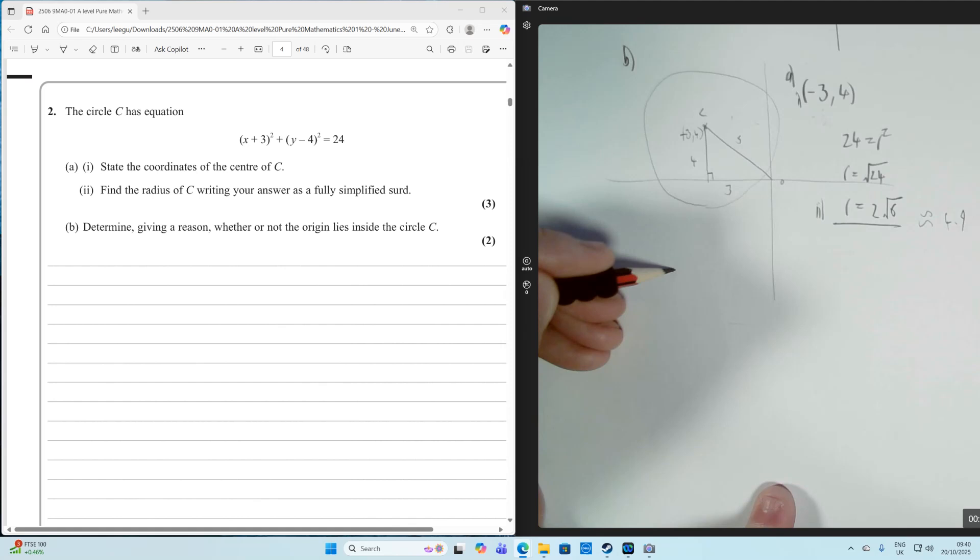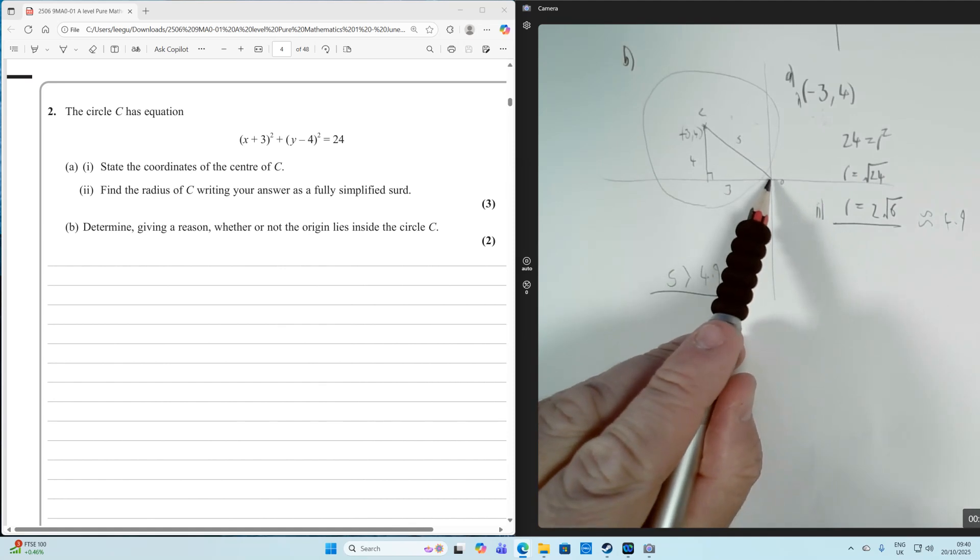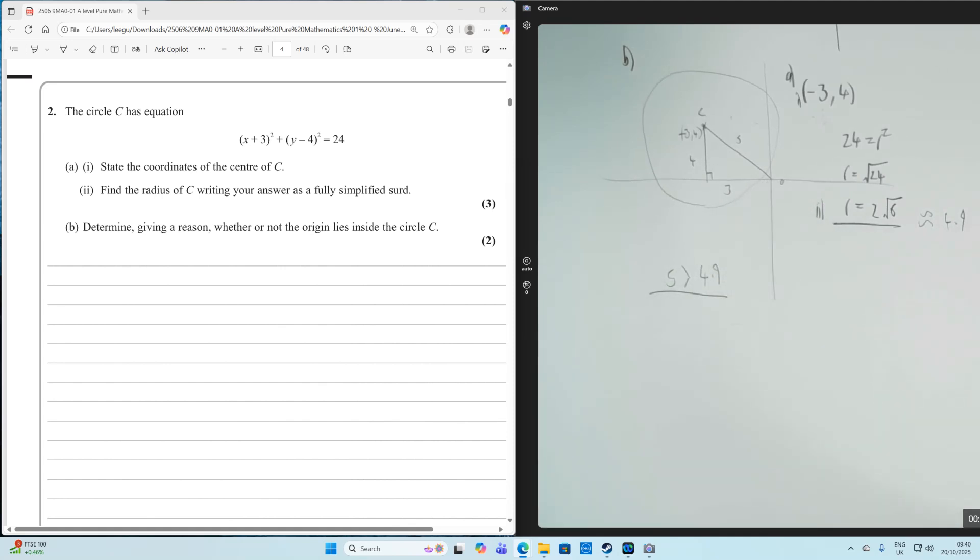Since 5 is greater than 4.9, the origin lies outside the circle. I hope you found that helpful, and I'll see you in the next video.